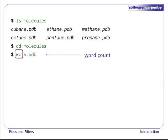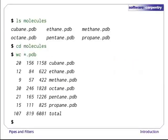The shell does this before wc runs, so the actual command is wc cubane.pdb, ethane.pdb, and so on. wc stands for word count. It counts the number of lines, words, and characters in files. Its output prints these values in columns: lines, words, characters, and the file name, one line per file, with a line for the total at the end.